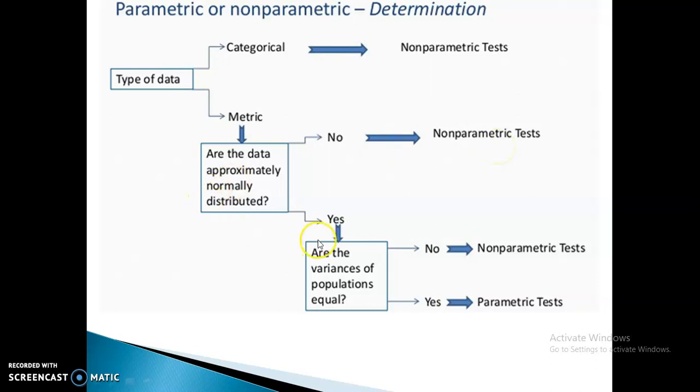The question is: are the data approximately normally distributed? If no, in that case again we will be going for non-parametric test. And if yes, in that case we will again ask a question: are the variances of populations equal, which means the variances of different samples? If they are equal, they are similar, or they look the same, in that case we can go for parametric test.